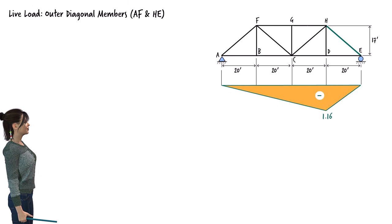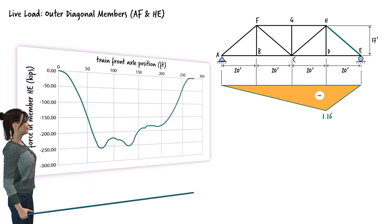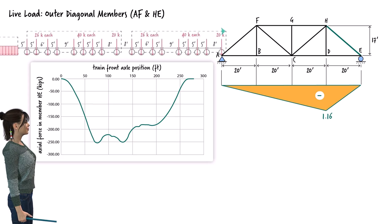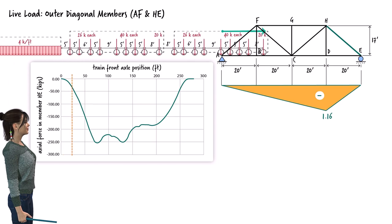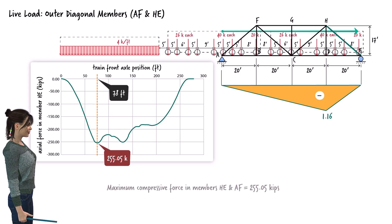To determine the maximum force in members AF and HE due to the live load, we only need to analyze one of them — let's consider HE. The force diagram generated by the app corresponds to the scenario in which the train travels from left to right, resulting in the maximum axial force. The maximum compression force develops when the front axle has traveled 78 feet to the right, giving a magnitude of 255.05 kips. So the compressive force in the outer diagonal members reaches a maximum of 255.05 kips.